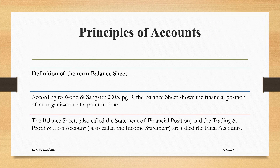As we look at the topic Introduction to the Balance Sheet, we must first define the term Balance Sheet. The Balance Sheet is a list of accounting balances at a particular time in the business entity. According to Wood and Samster (2005, page 9), the Balance Sheet shows the financial position of an organization at a point in time. The Balance Sheet is also called the Statement of Financial Position, and the Trading and Profit and Loss Account is also called the Income Statement or the Final Accounts. These two accounting documents — the Balance Sheet and the Trading and Profit and Loss Account — make up the Final Accounts.